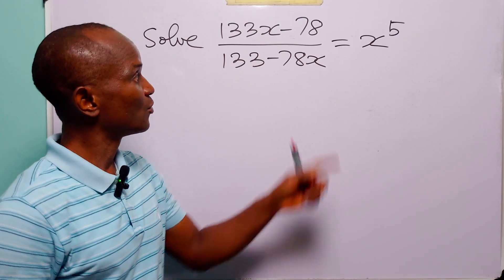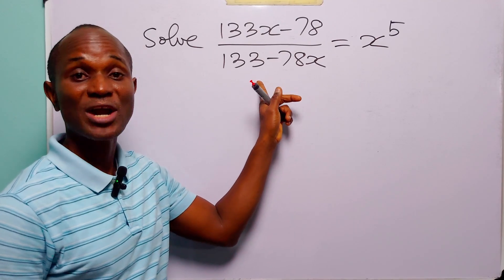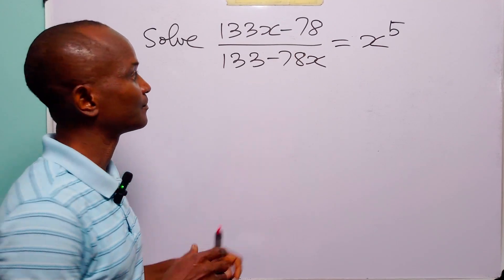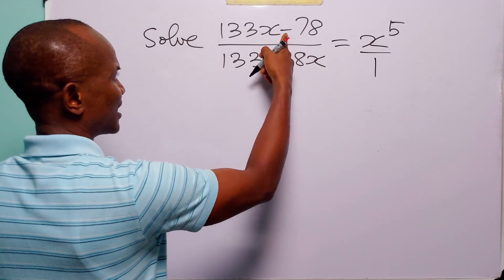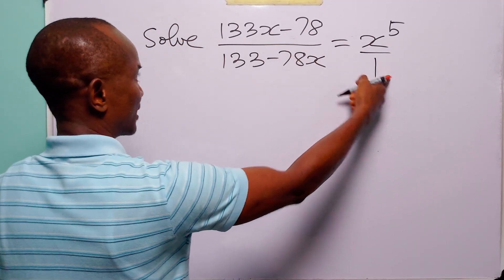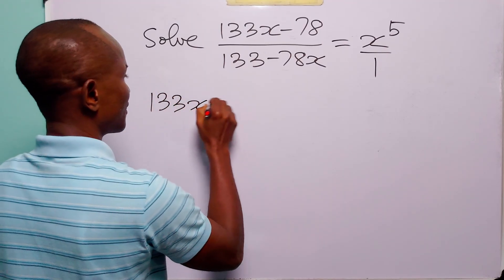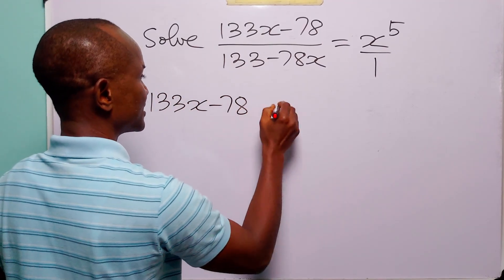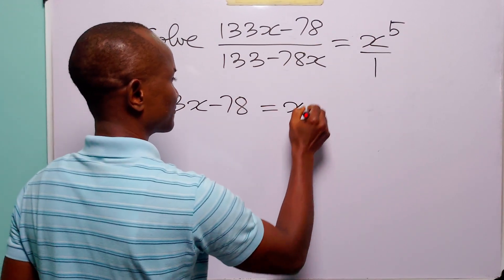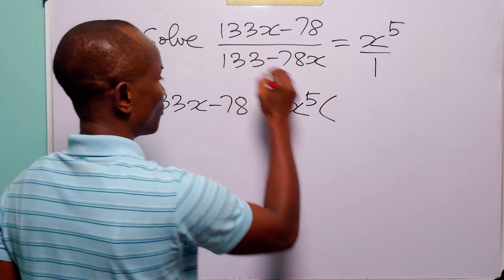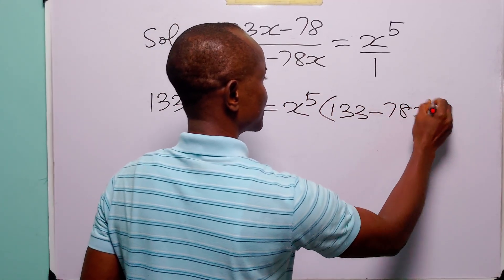To solve this problem, we are going to start by cross-multiplying to get rid of the fraction on the left-hand side. This is over 1, of course. When we cross-multiply, we have this times 1, that is 133x minus 78, is equal to x raised to the power 5 times 133 minus 78x.